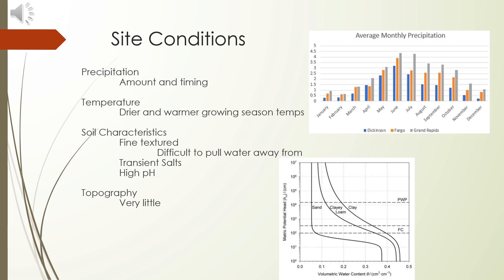It's important to understand that North Dakota is a prairie landscape. Generally that means it doesn't have adequate moisture, temperature, or humidity regimes that promote healthy tree growth. When you combine this with the general soil conditions and a lack of topography, you have challenging growing conditions to start with.